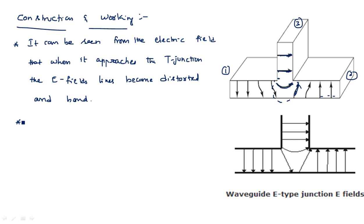Whether the input electric field lines are in the upward or downward direction is immaterial, but the output gives 180 degrees out of phase with respect to the input. The downward electric field lines, after crossing the junction, are slowly converted — the output field lines are out of phase with the input.